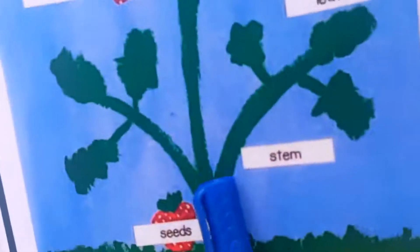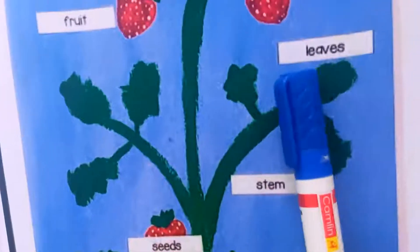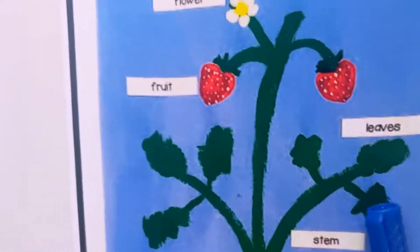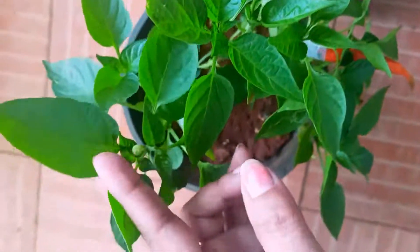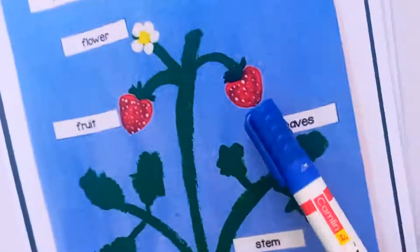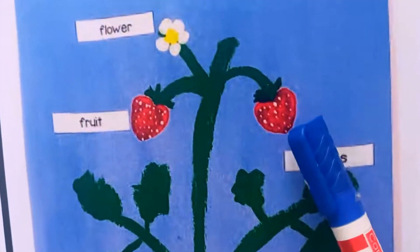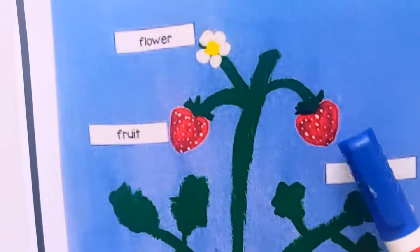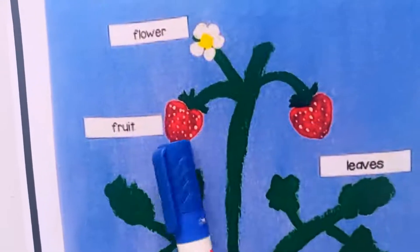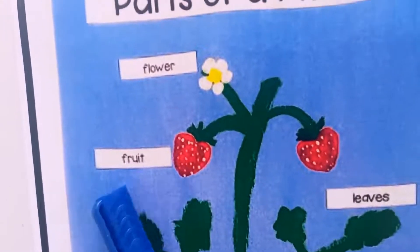Now see the leaves. These are leaves — here you can see the leaves. Now look here — what are these? These two are fruits. This is the fruit.